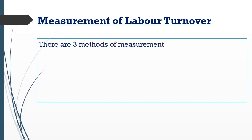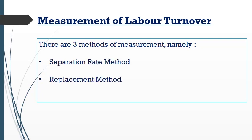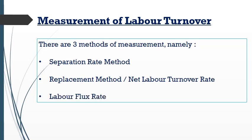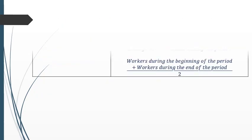There are three types of methods used to measure labor turnover: the separation method, the replacement method (also called the net labor turnover method), and the labor flux rate method.